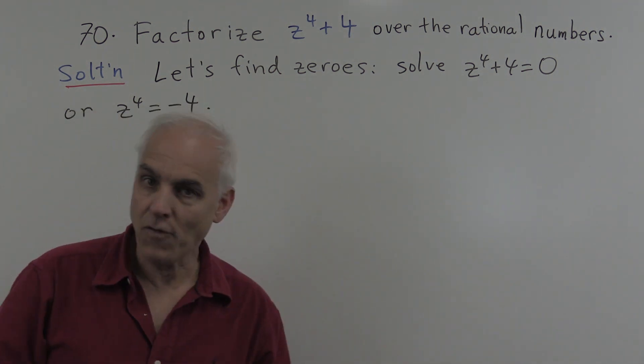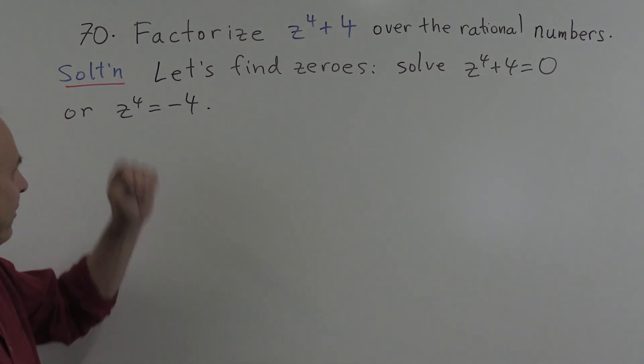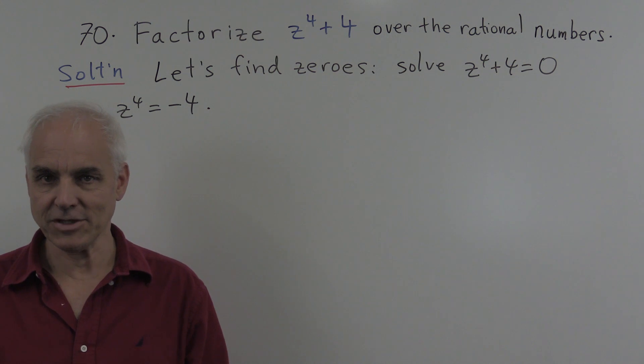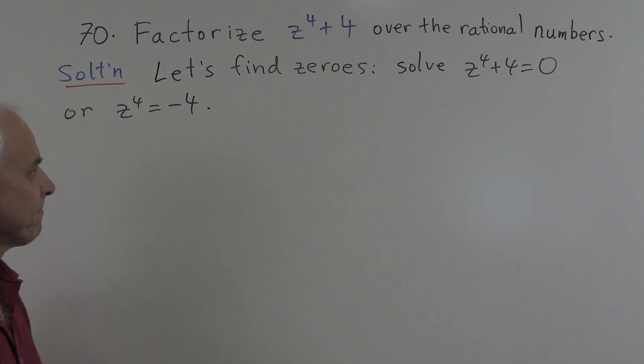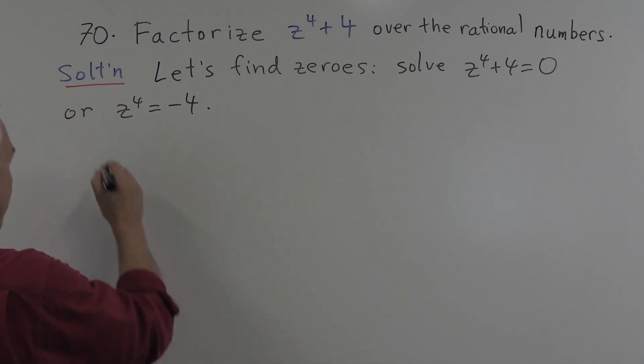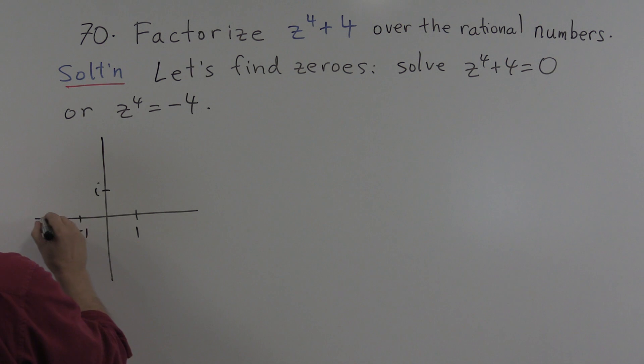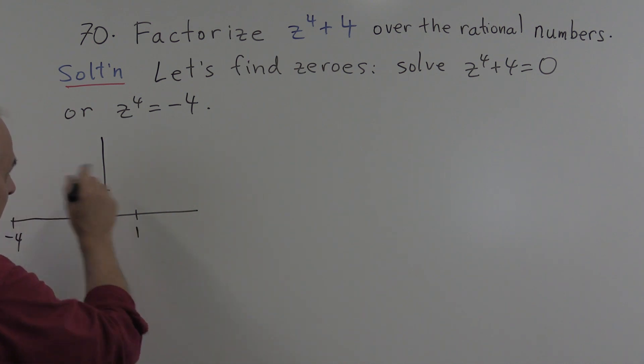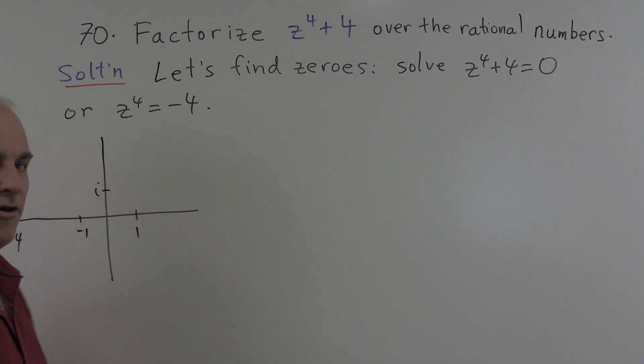Well over the rational numbers there are no rational numbers whose fourth power is minus 4. It's not possible. But over the complex numbers it is possible. So the picture that we have is complex plane 1, i, minus 1, and minus 4 over here somewhere. And what we're interested in is the fourth roots of minus 4.